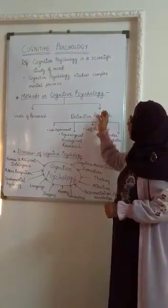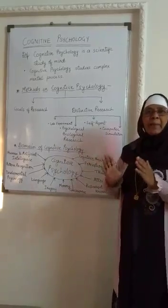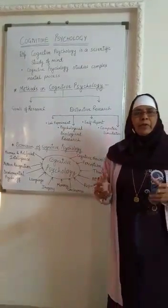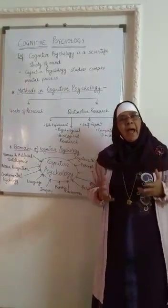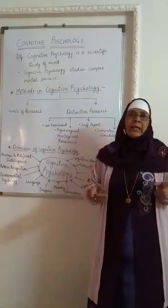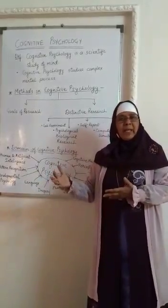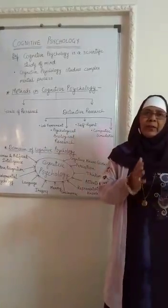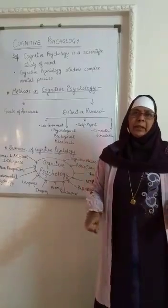Another method in psychology is the distinctive research method. It has sub-methods. The first is the lab experiment. A laboratory experiment is conducted under controlled conditions, in cubicles. Psychologists have cubicles and laboratories, and they conduct experiments on subjects using various apparatus, various tests, and various experimental procedures through which we try to find out the problem of the person. It is under controlled conditions.